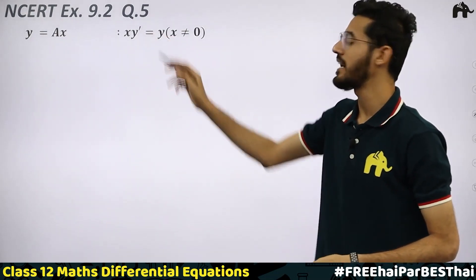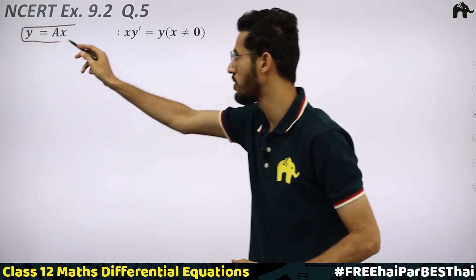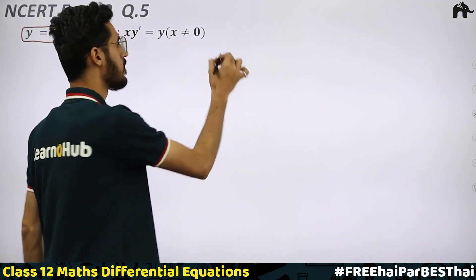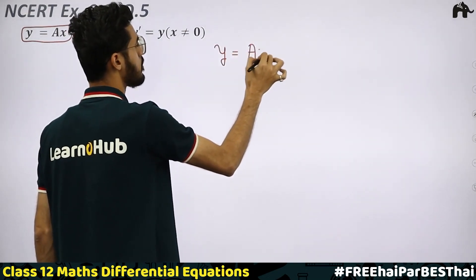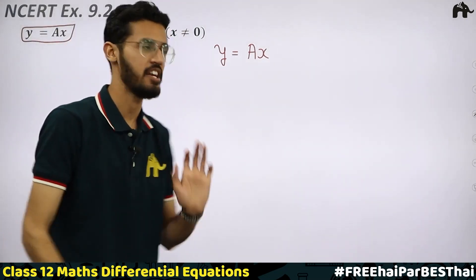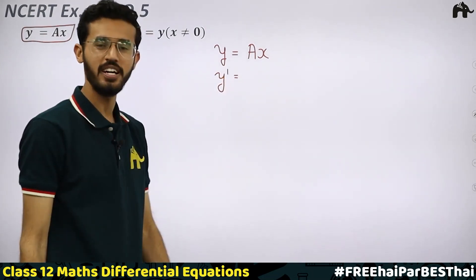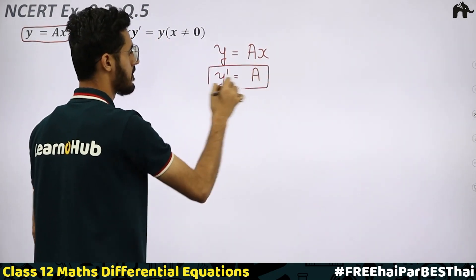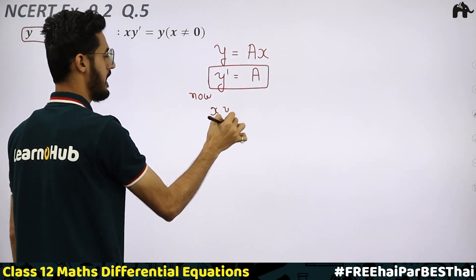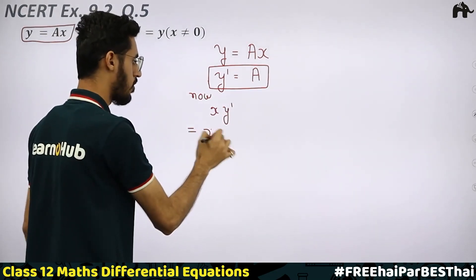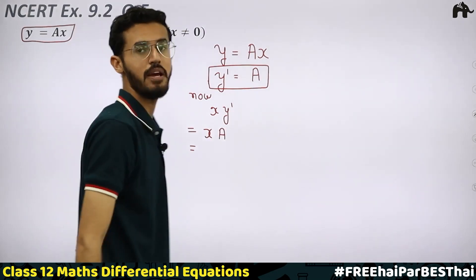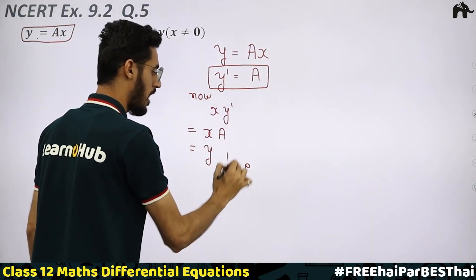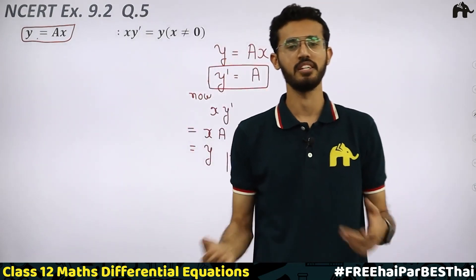Question 5: y = ax, differential equation: x·y′ = y. Find y′: derivative of ax is a, so y′ = a. Now LHS: x·y′ = x·a = ax. And ax = y, so x·y′ = y. Hence proved — this function is a solution of the differential equation.